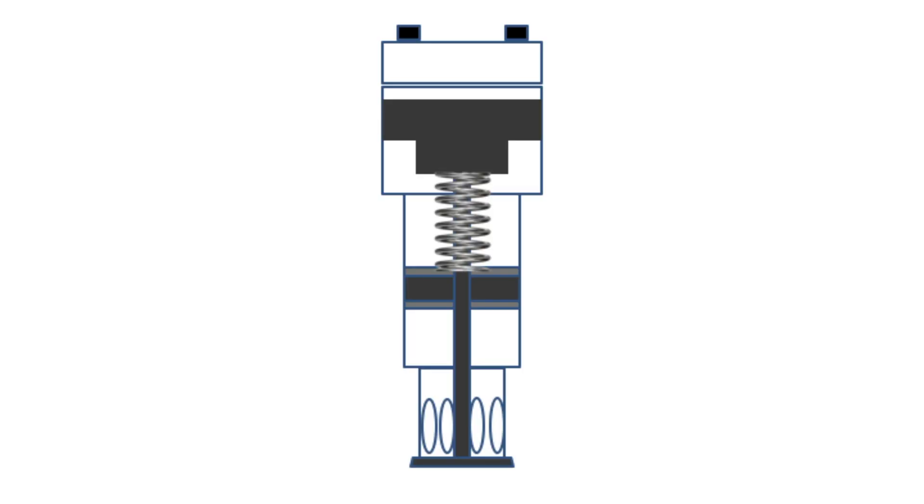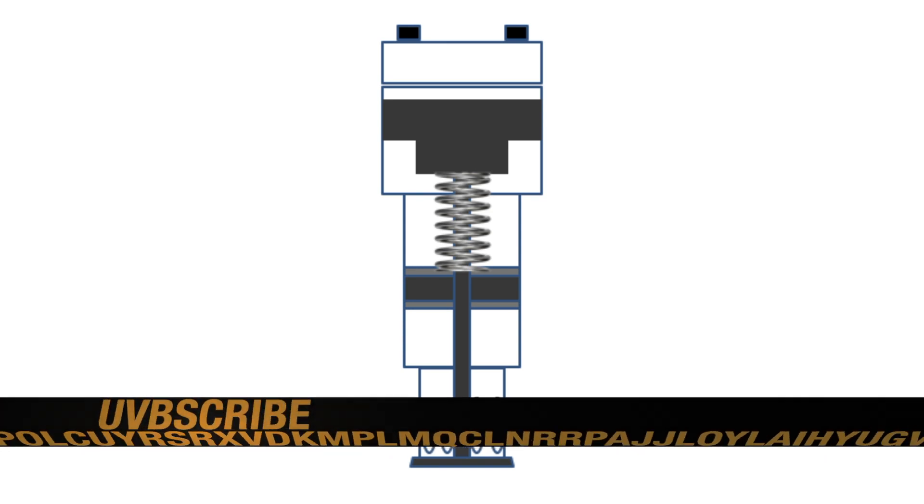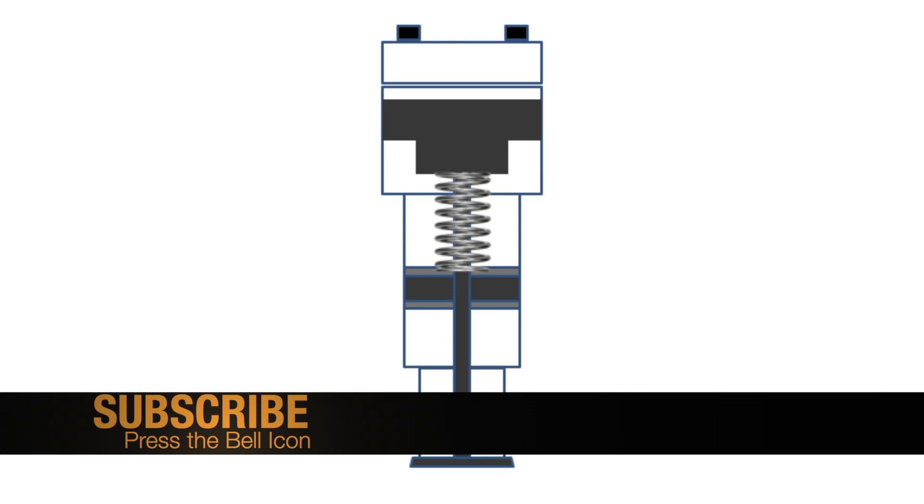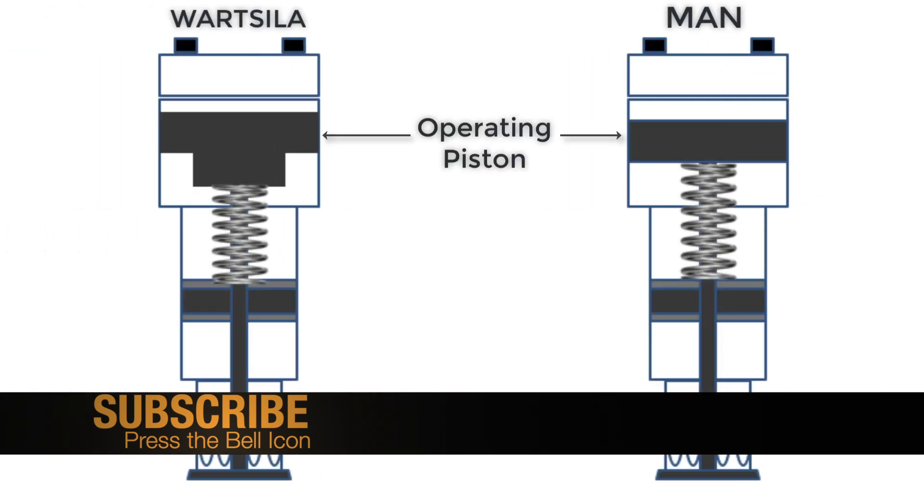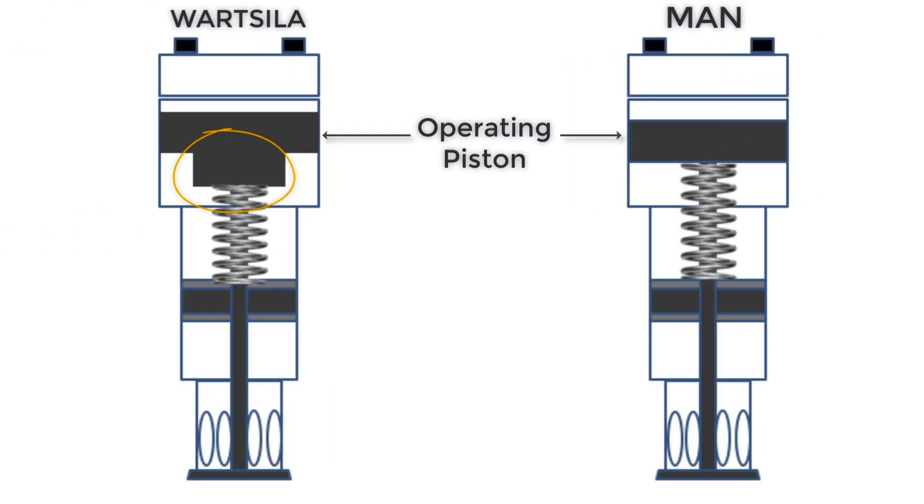In Wärtsilä engines, the valve construction is almost similar to that of a MAN engine. The only difference is in the operating piston, which is of stepped type in construction.